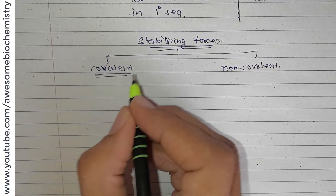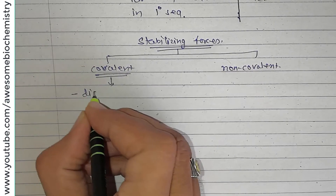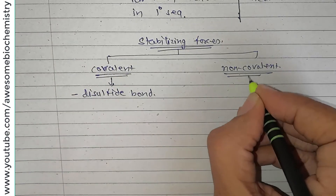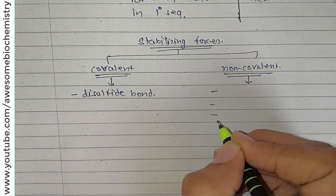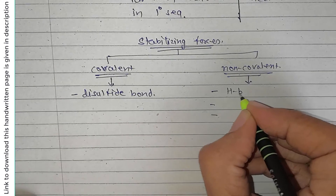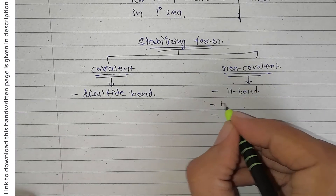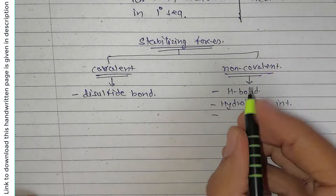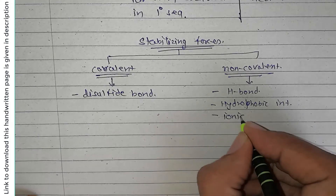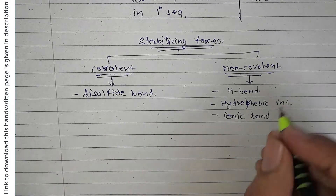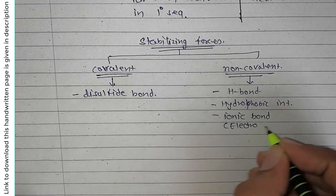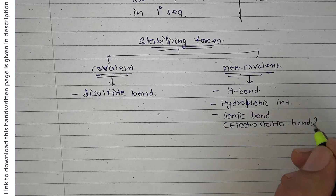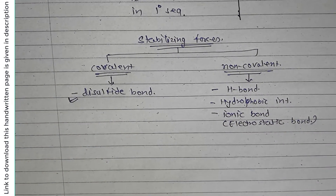In the covalent category, we have disulfide bonds. In the non-covalent category, we have three types: hydrogen bonds, hydrophobic interactions, and ionic bonds — also known as electrostatic bonds or electrostatic interactions. Let's first discuss the disulfide bond.